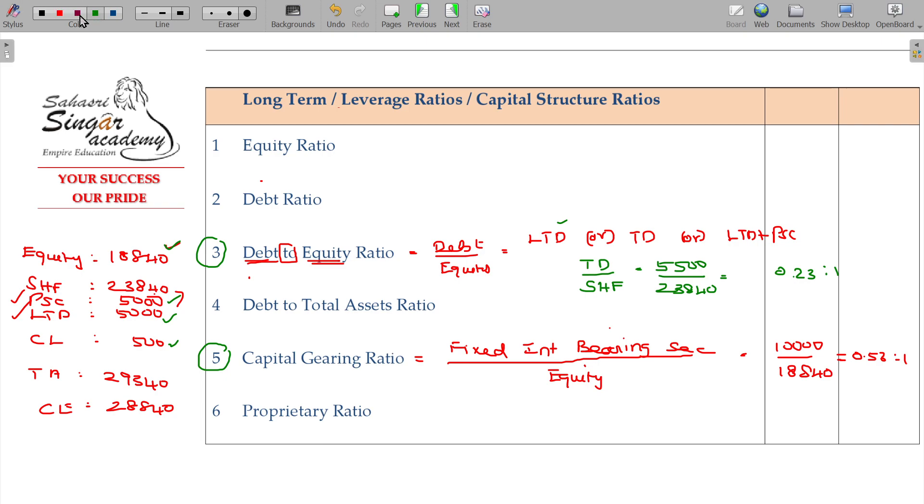And fourth being, debt to total assets. This is easier. Debt divided by total assets. Total assets are 29,340. But debt here, what do you need to do? In the book, there is total debt. Total debt is 5,000. And then the ultimate value being 0.19 is to 1.